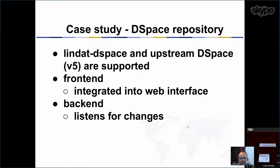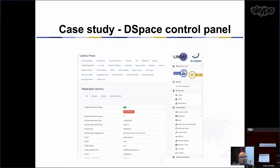Now about our case study with the DSpace repository. We have a Lindat DSpace repository which we are actively developing. That's a modified version of the upstream DSpace version 5.4, and B2Safe is integrated into the web interface but also does all the work in the back end. It listens for changes to a file or an item — for example when it first gets approved — and then it triggers the replication service. The DSpace has something called the control panel which can be used for getting information and changing configuration, and we added one tab there called the IRS replication.